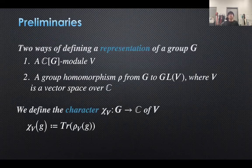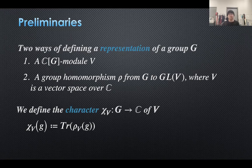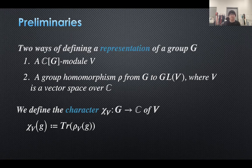First, I will introduce what a representation is. There are two ways to define representations. One is a CG module. The other is a group homomorphism from G to GL(V), where GL(V) is a general linear map and V is a vector space over C. These two definitions may seem completely different at first glance, but in fact they are exactly the same thing.